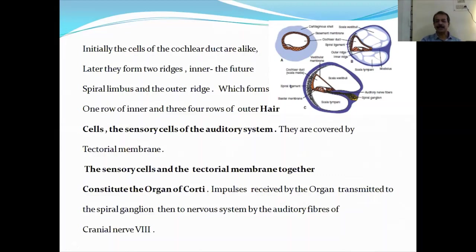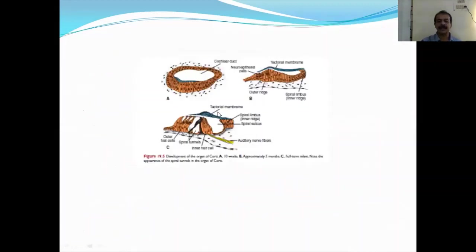Initially the cells of the cochlear duct are aligned. Later they form two regions: the inner ridge — the future spiral limbus — and the outer ridge. Here you can see this is the inner ridge and this is the outer ridge. The outer ridge will form one row of inner hair cells and three or four rows of outer hair cells. You can see the inner single layer of cells and the outer three or four layers of hair cells.